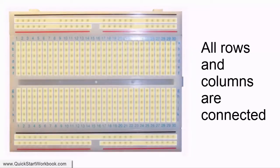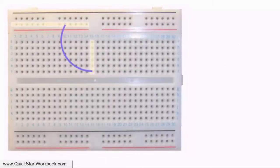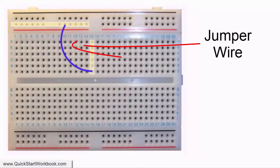This is the case for all the rows and columns on the breadboard. Jumper wires are used to connect contacts in different rows and columns.